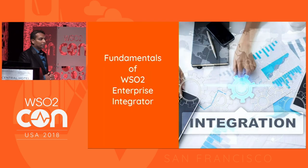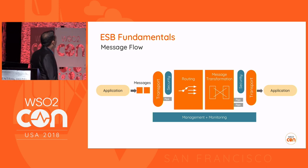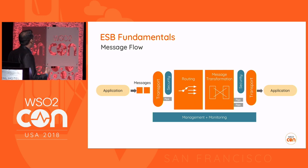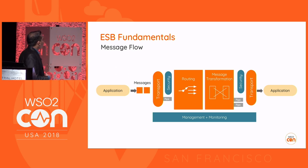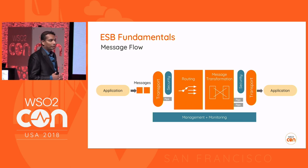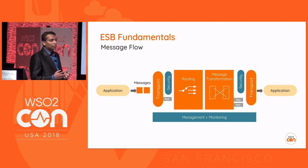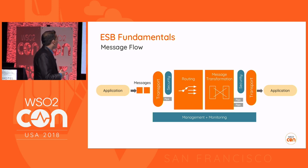Before going into the implementation, I will briefly explain some of the fundamentals of Enterprise Integrator. Let's start with the high level message flow. On the left we have the client application. The client sends a message into the Enterprise Integrator, which has a layered architecture. When the client sends a message, it will first get dispatched into a layer called the transport layer.